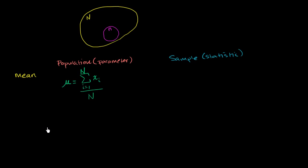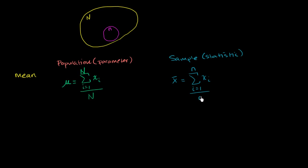Then we divide by the total number of data points we have. For the sample mean, we do a very similar thing with the sample, and we denote it with x-bar. That's going to be taking every data point in the sample up to lowercase n, adding them up, and then dividing by the number of data points we actually had.